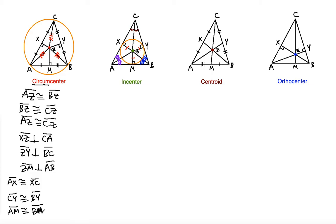These properties will help you solve numerous problems dealing with a circumcenter. Usually you will not see a circle — you will just see a point indicated as a circumcenter and have to deduce it. Whenever you see a perpendicular relationship and bisected segments where AC, BC, and AB are each divided into two equal parts, you immediately know you are talking about a circumcenter. You must imagine a circle circumscribing the triangle, and realize that AZ, CZ, and BZ are congruent because they are the radii.